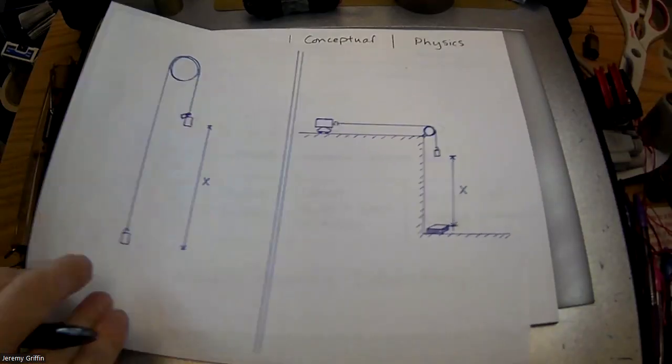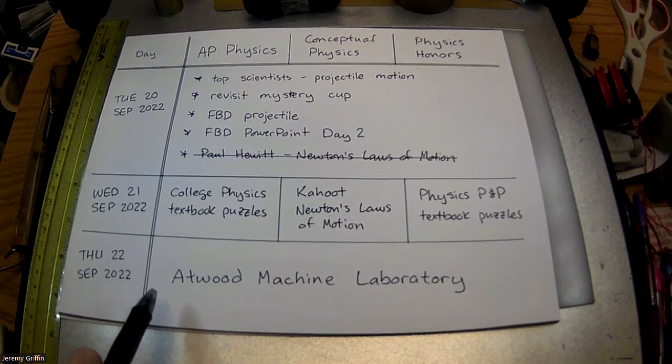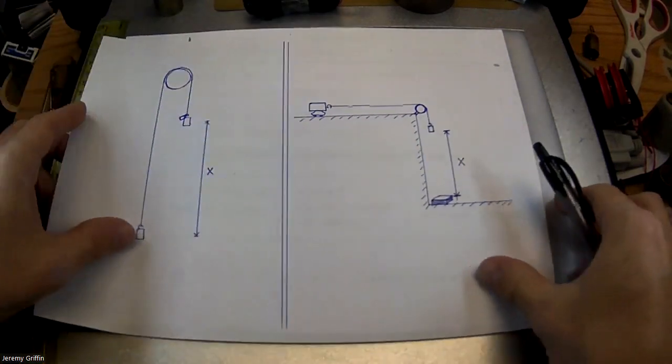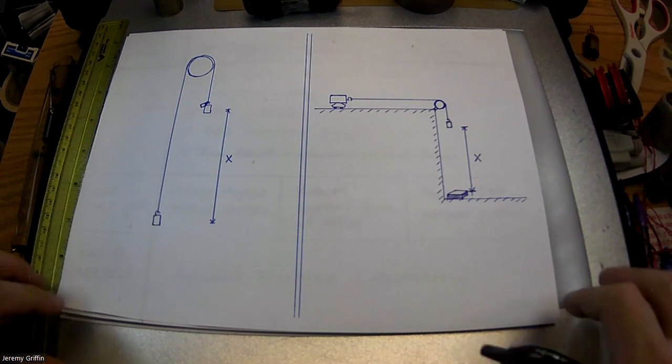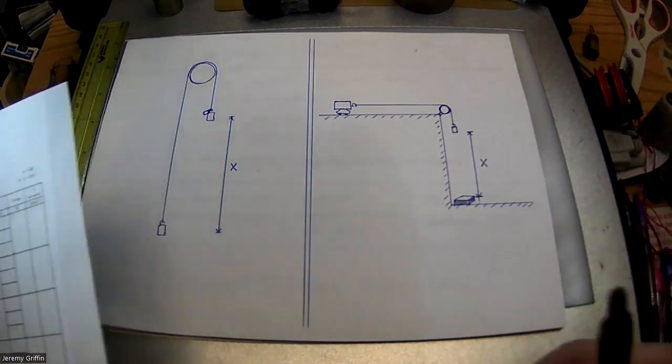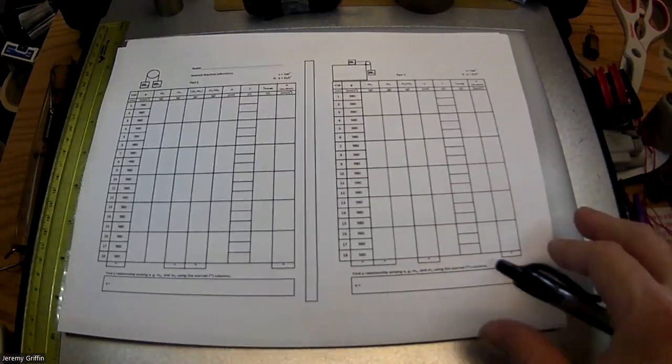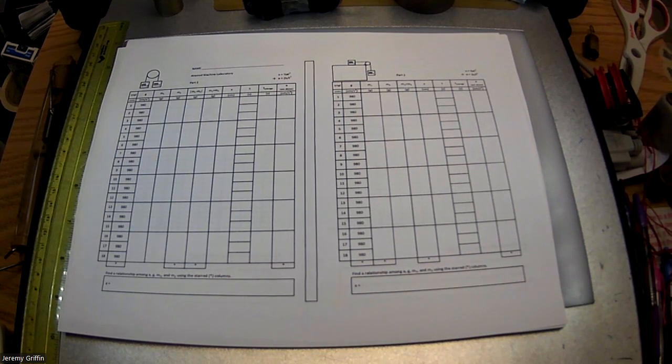Recording is rolling. Today is Thursday, September 22nd, and that is Atwood Machine Day. So this is going to be your lab setup. You guys have a lab page in front of you that looks like this.